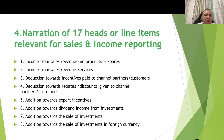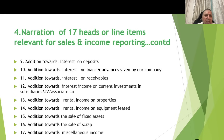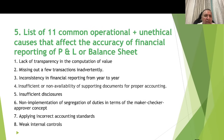The 17 heads or line items related to sales and income reporting are: income from sales revenue — end products and spares; income from sales revenue — services; deduction towards incentives paid to channel partners or customers; deduction towards rebates or discounts to channel partners; addition towards export incentives; dividend income from investments; sale of investments; sale of investment in foreign currency; interest on deposits; interest on loans and advances given by the company; interest on receivables; interest income on current investments in subsidiaries, JV, or associate companies; rental income on properties; rental income on equipment leased; sale of fixed assets; sale of scrap; and other miscellaneous income.